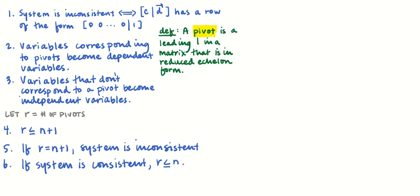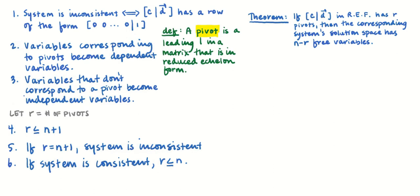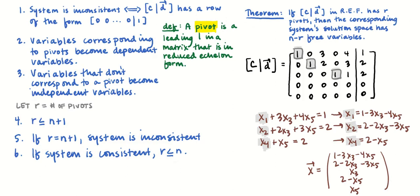All of these comments together lead me to the theorem: if we have a reduced augmented matrix in reduced echelon form with r pivots, then the system's solution space has n minus r free variables. Going back to the matrix we worked on, this fits: we had three pivots and it was a five-variable system, meaning we had to have two free variables.